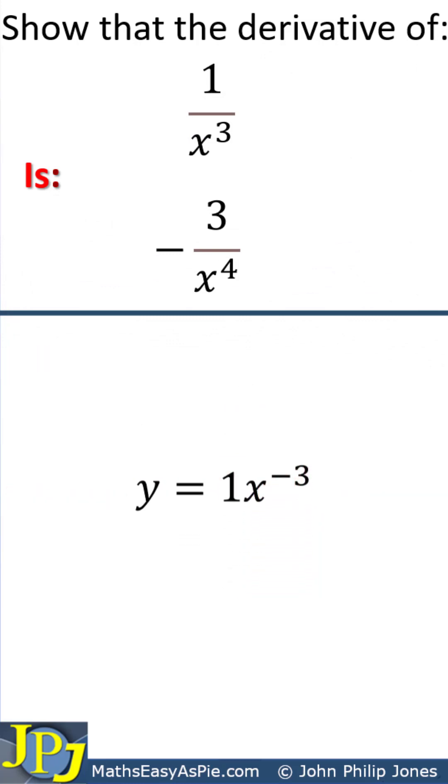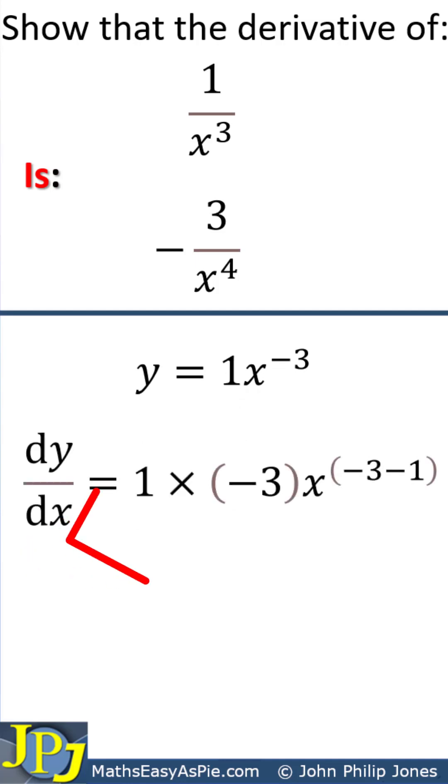We can now apply the power rule, and the next step is shown here. You can see this is 1 times minus 3, which is this 1 times this -3. The x is placed here, and from this exponent we take 1 as shown here.